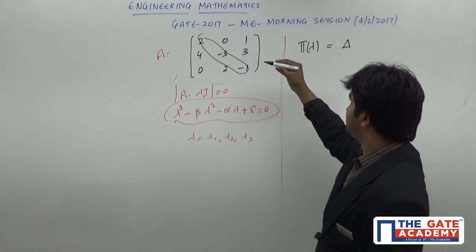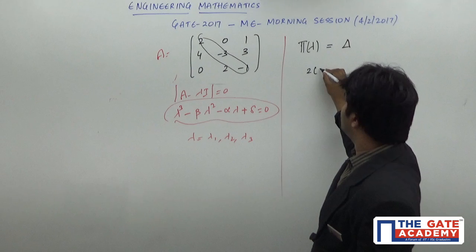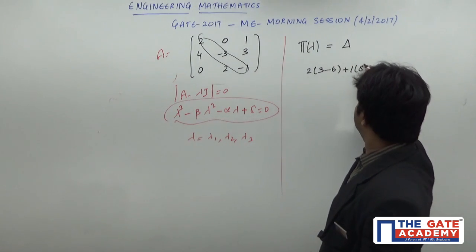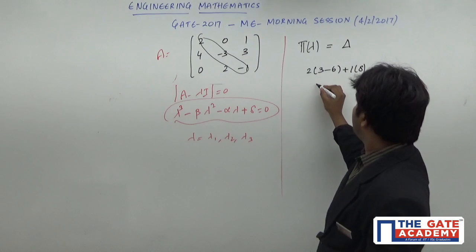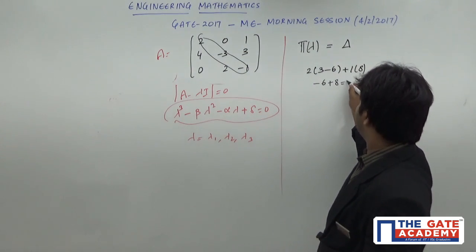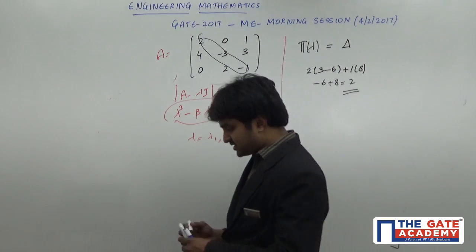The determinant is 2 times (3 minus 6) plus 1 times 8, which equals -6 plus 8, which equals 2. So the answer is 2.